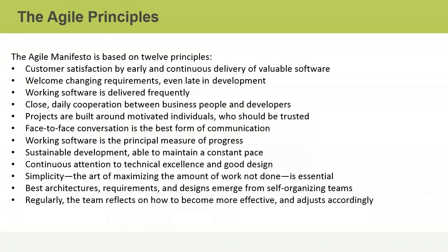As part of the Agile Manifesto, the group also outlined 12 principles. Our highest priority is to satisfy the customer through early and continuous delivery of valuable software. Welcome changing requirements, even late in development — Agile processes harness change for the customer's competitive advantage. Deliver working software frequently, from a couple of weeks to a couple of months, with a preference to the shorter timescale. Business people and developers must work together daily throughout the project. Build projects around motivated individuals, give them the environment and support they need, and trust them to get the job done.